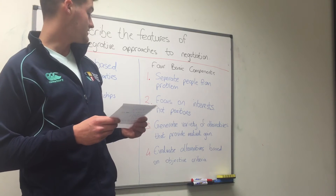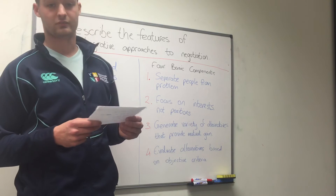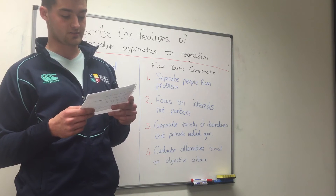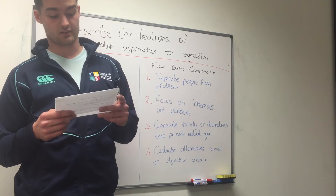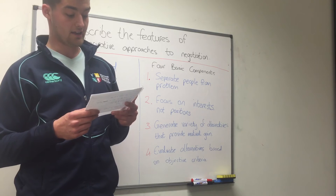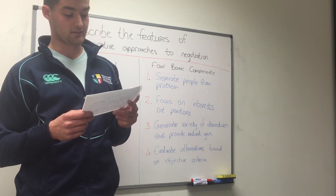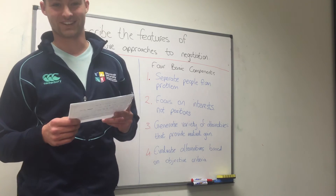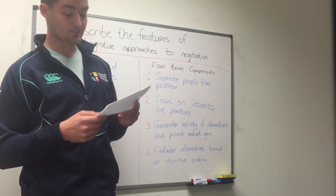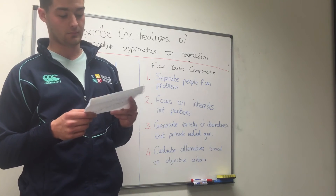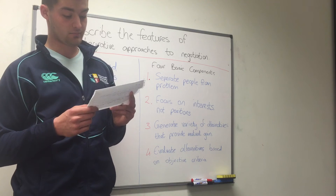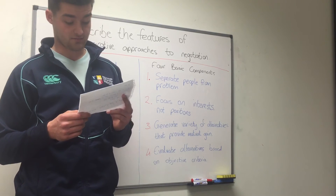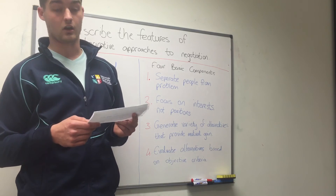The third component is to generate a variety of alternatives that provide mutual gain. The first step is to develop alternatives that create value by working together. The best way to achieve this is brainstorming, and because of this Fisher and Ury say that creative option generation is a useful negotiation skill. There are four main obstacles to creating value: making premature judgments, searching for a single answer, believing that the pie is fixed, and assuming that the other party should meet their own goals.